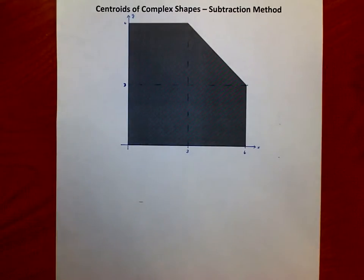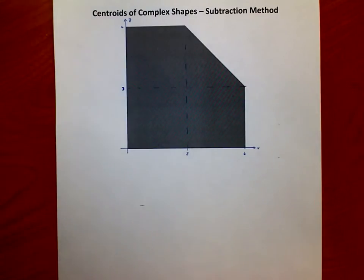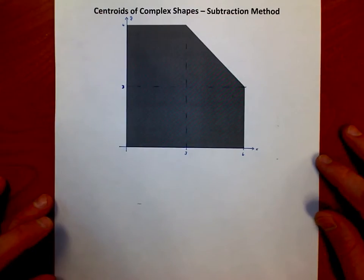Hi guys, in this video, this is the second video, same exact shape, different method. It's called the subtraction method. We want to find the centroid, the center of gravity, center of mass, whatever you want to refer to it as for our class, it's all the same right now. We want to find the centroid of this particular shape. We're going to take a different approach this time.